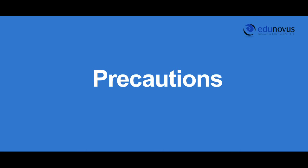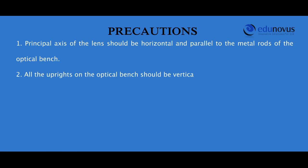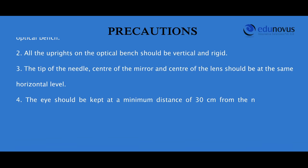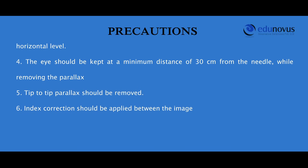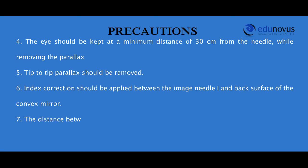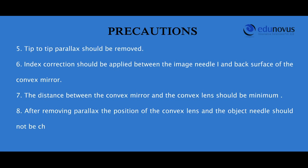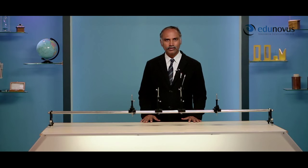Precautions: The principal axis of the lens should be horizontal and parallel to the metal rods of the optical bench. All uprights should be vertical and rigid. The tip of the needle, centre of the mirror, and centre of the lens should be at the same horizontal level. The eye should be kept at a minimum distance of 30 cm from the needle while removing parallax. Tip-to-tip parallax should be removed. Index correction should be applied between the image needle and the back surface of the convex mirror. The distance between the convex mirror and convex lens should be minimum. After removing parallax, the positions of the convex lens and object needle should not be changed. I hope you are now able to determine the focal length of any given convex mirror on your own. Thanks for watching.